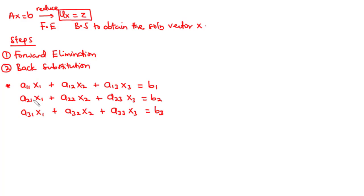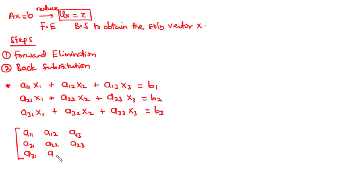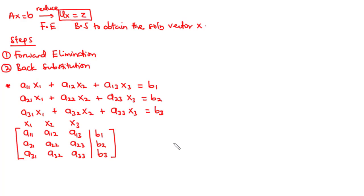We represent the system in augmented matrix form by writing down the coefficients of x1, x2, and x3 in order. So we have the elements a11, a12, a13, then a21, a22, a23, then a31, a32, a33. We place a vertical bar and then write the constants on the right-hand side of the three equations: b1, b2, b3. Column 1 corresponds to x1, column 2 to x2, and column 3 to x3.